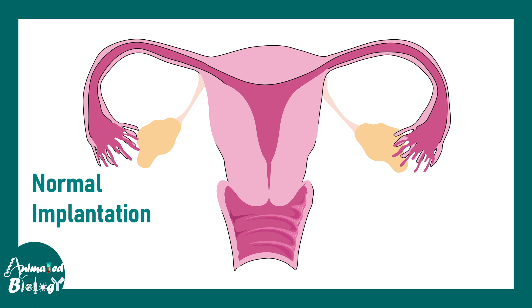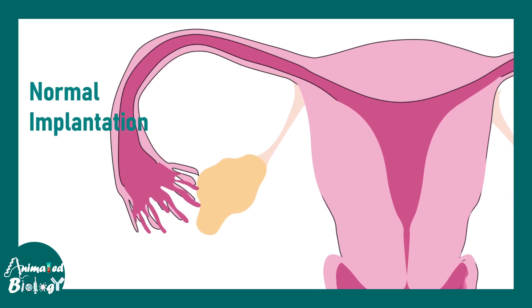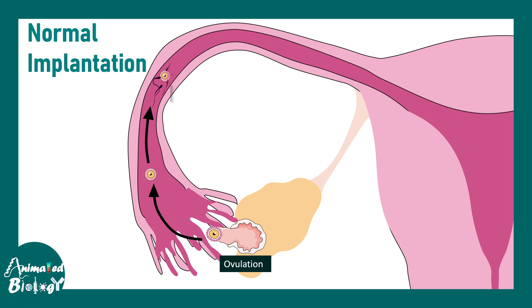Looking at the anatomy: here is the ovary, here is the uterus, here is the cervix, here is the vagina, and here is the fallopian tube with its three regions — the fimbria, which are the finger-like projections, the ampulla, and the isthmus. Ovulation happens from the ovary; the egg travels through the fimbria towards the ampulla, and fertilization occurs at the ampullary-isthmic junction.